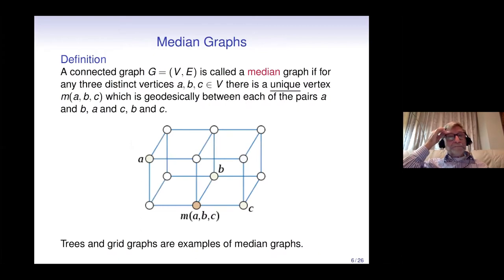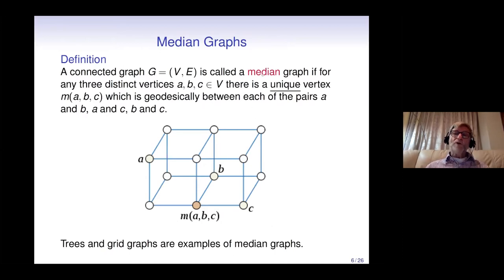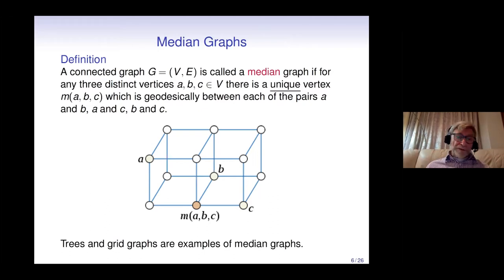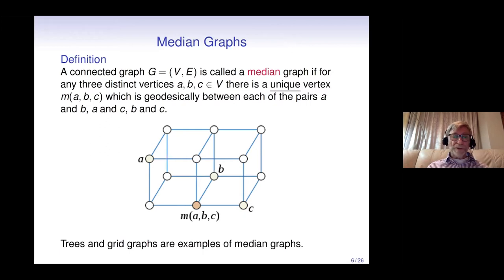There is a special class of graphs closely related to Condorcet domains called median graphs. For every three distinct vertices a, b, and c, there is a unique vertex m lying on the shortest path from a to b, from a to c, and from b to c. Examples of median graphs include trees and grid graphs — effectively, any retract of an n-dimensional cube is a median graph.